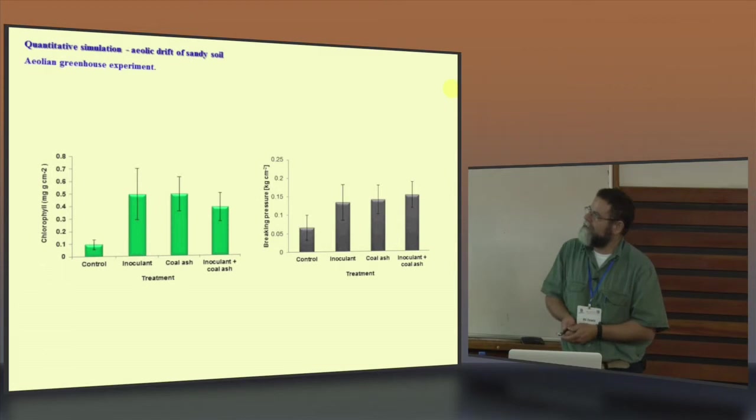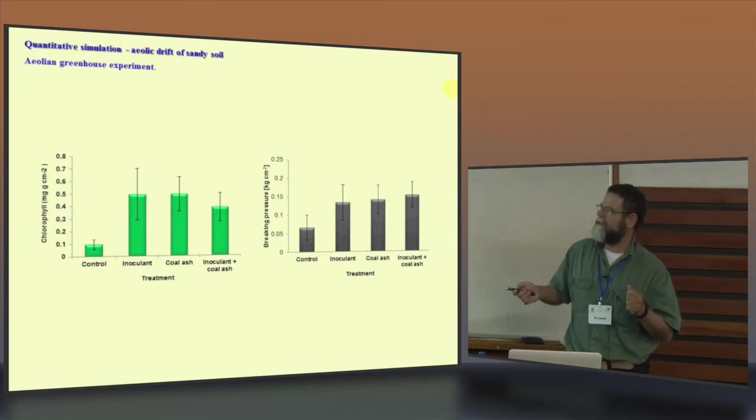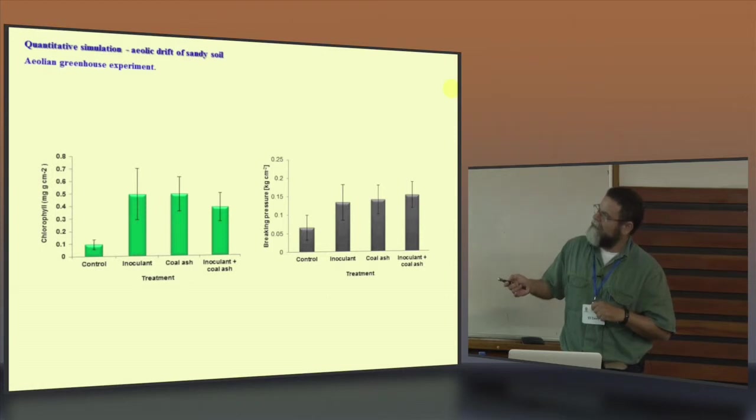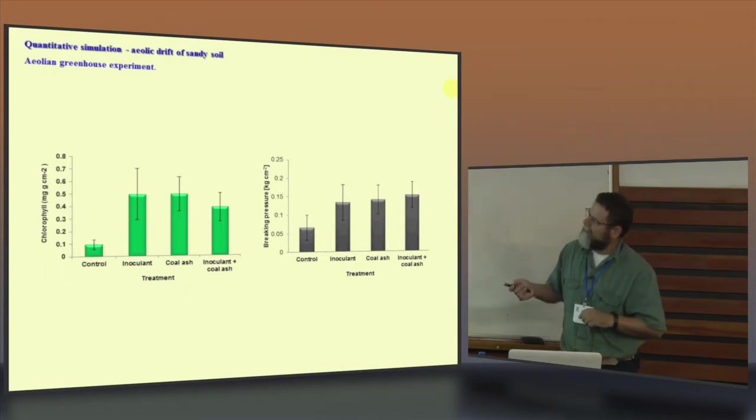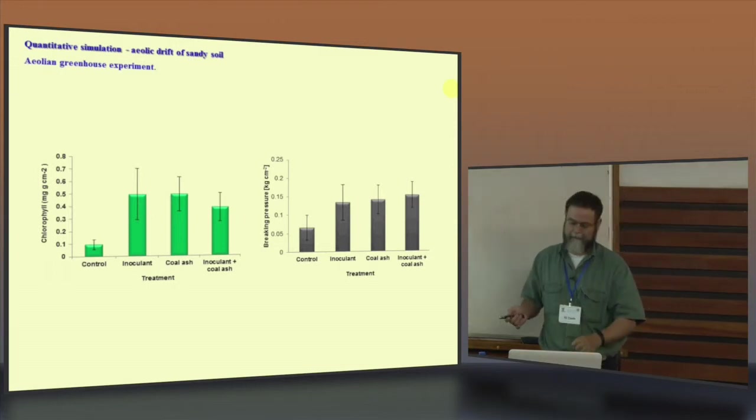These are the results. When we're looking at the chlorophyll level, the inoculant treatment, coal ash and inoculant plus coal ash are much higher in level of the chlorophyll compared to the control sand. And when we're looking at the breaking pressure, we use a field penetrometer. Again, all the three treatment gave us a higher result and significant from the control.